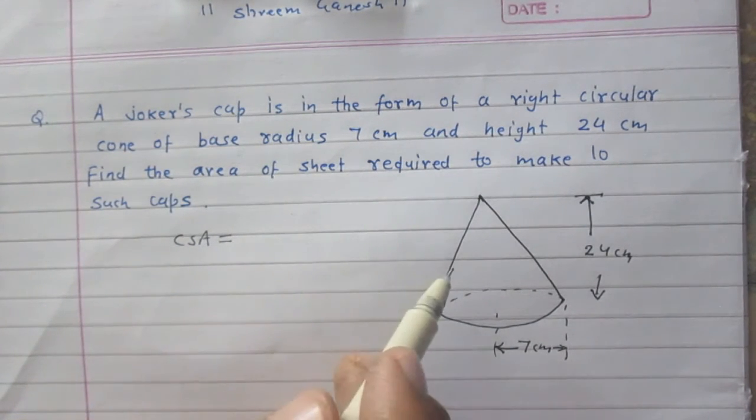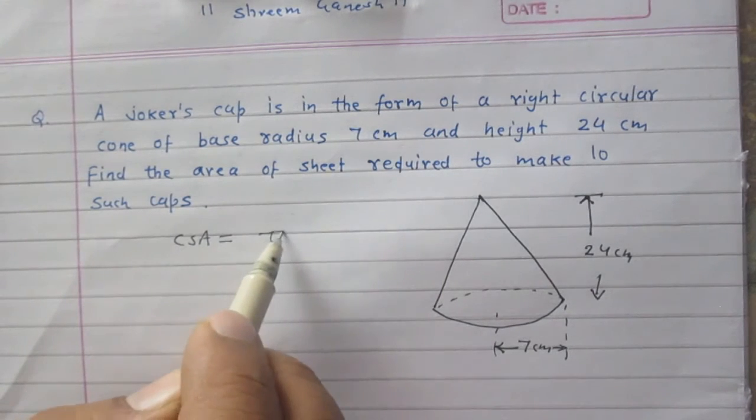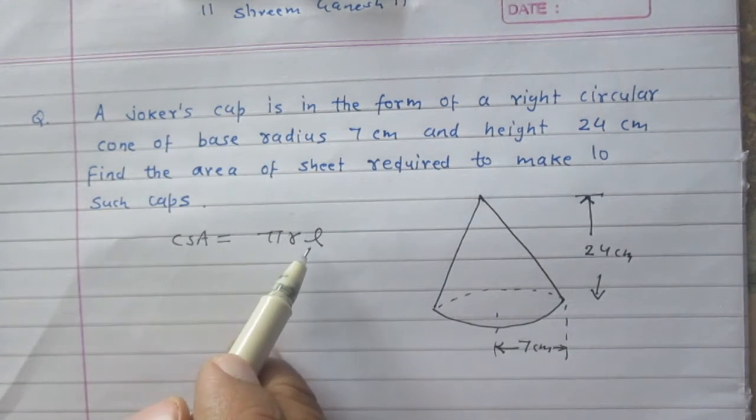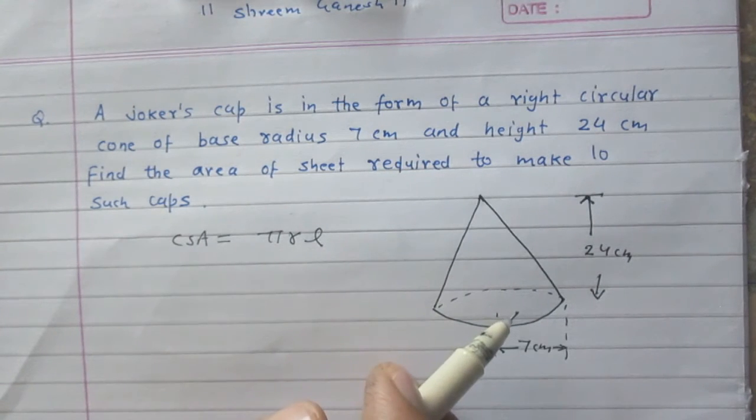So the flat base is not included in the area of the cap. So curved surface area of a cap, or you can say this cone, is πRL, where R is the radius of this cap and L stands for slant height of this cap.